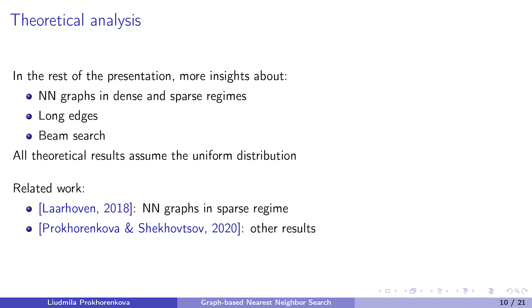I'll discuss simple nearest neighbor graphs, the effect of long edges, and the effect of beam search. All theoretical results assume that datasets are uniformly distributed over a d-dimensional sphere. Hence, the neighbors are naturally diversified. So I will not discuss the effect of diversification. The complexity of graph-based algorithms for the uniform distribution was analyzed in the two papers listed on the slide.